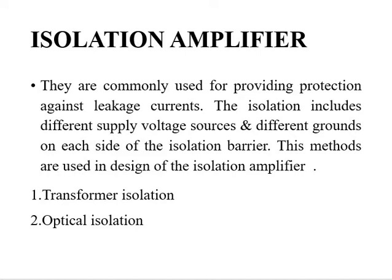Transformer isolation is very simple in concept — it is magnetically coupled but electrically isolated. For example, take two magnets with the same poles. When both magnets are brought together, they repel each other, and when opposite poles are brought together, they attract each other. There is a force, an energy, acting between the two magnets. Here also, that magnetic action takes place through the transformer. I will explain that in detail under transformer isolation.